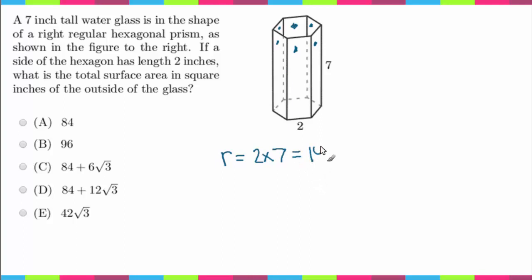So now if we wanted to find the area of the entire outside here, we would just have to multiply that by 6. So I'm going to call that big R, and that's just going to be 14 times 6, which is equal to 84.